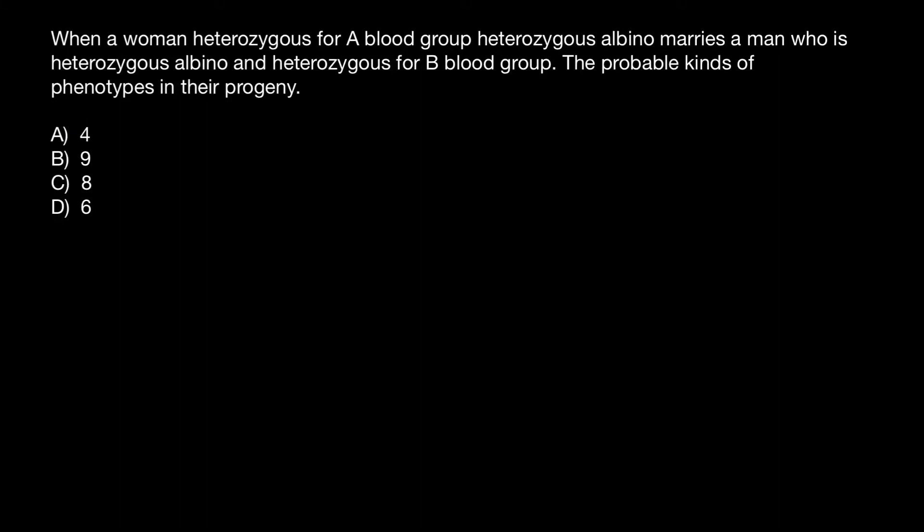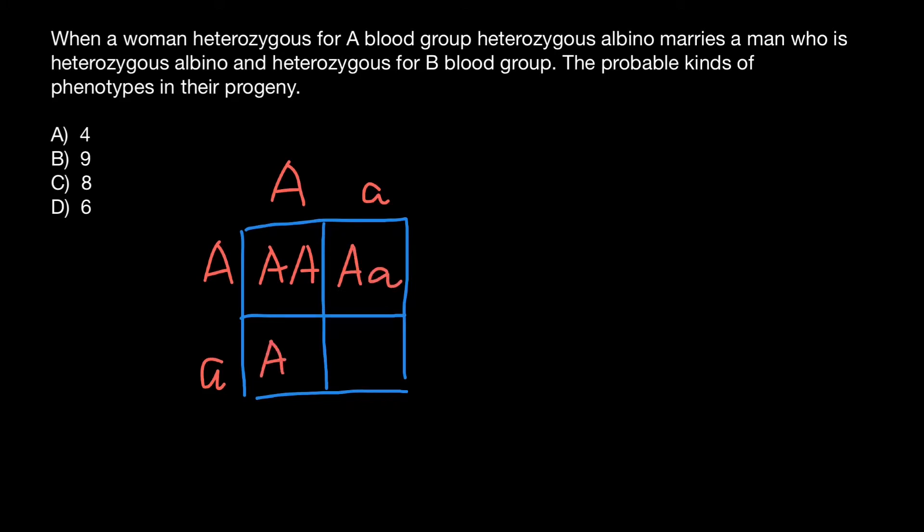So how are we going to approach this problem? Let's analyze the first trait, which is going to be albino. We are told that both woman and male are heterozygous for albino. That means this is a recessive genetic disorder. Three quarters of the progeny are going to be phenotypically normal and would have at least one dominant allele, and one quarter would be affected and would have two recessive alleles. So such a cross would produce two phenotypes.